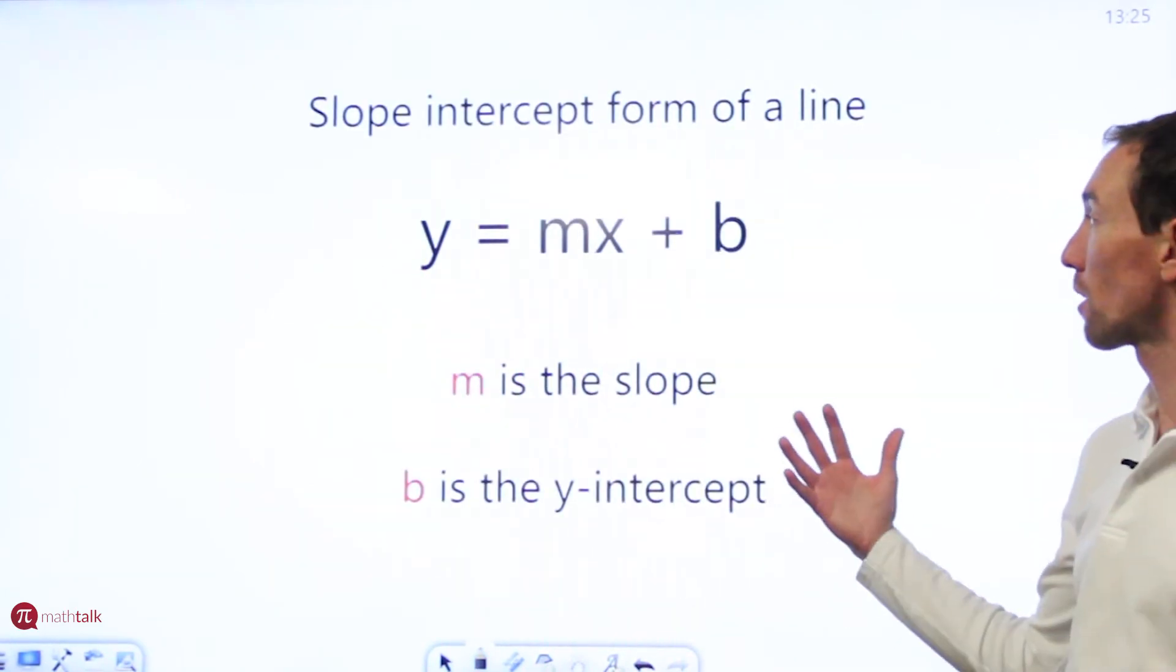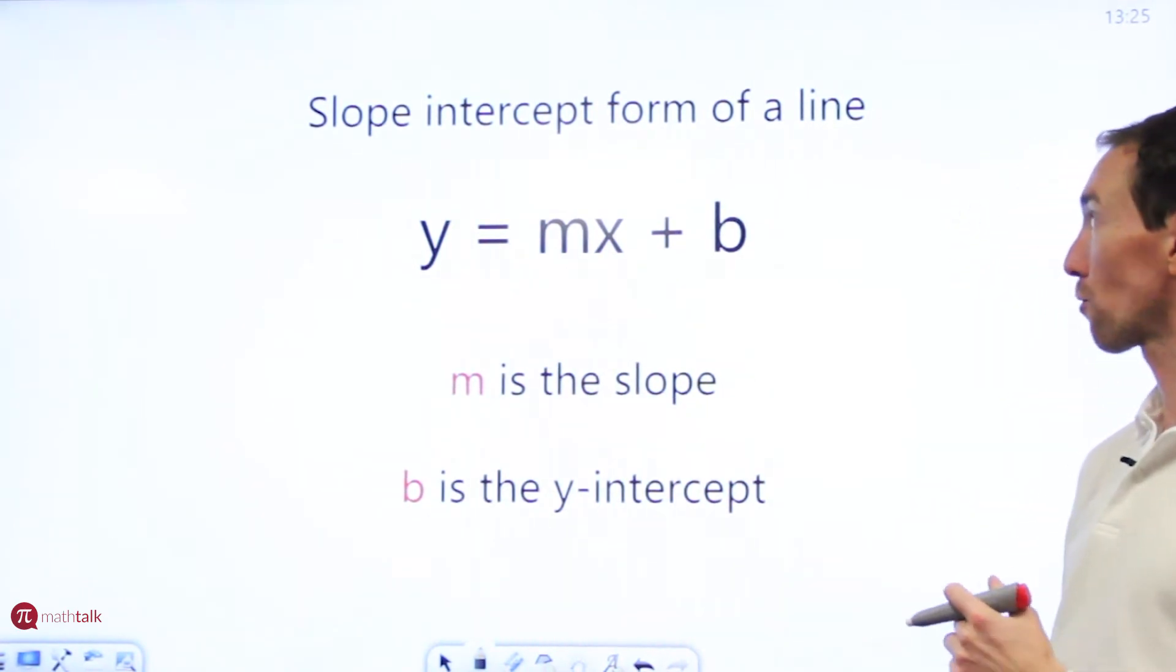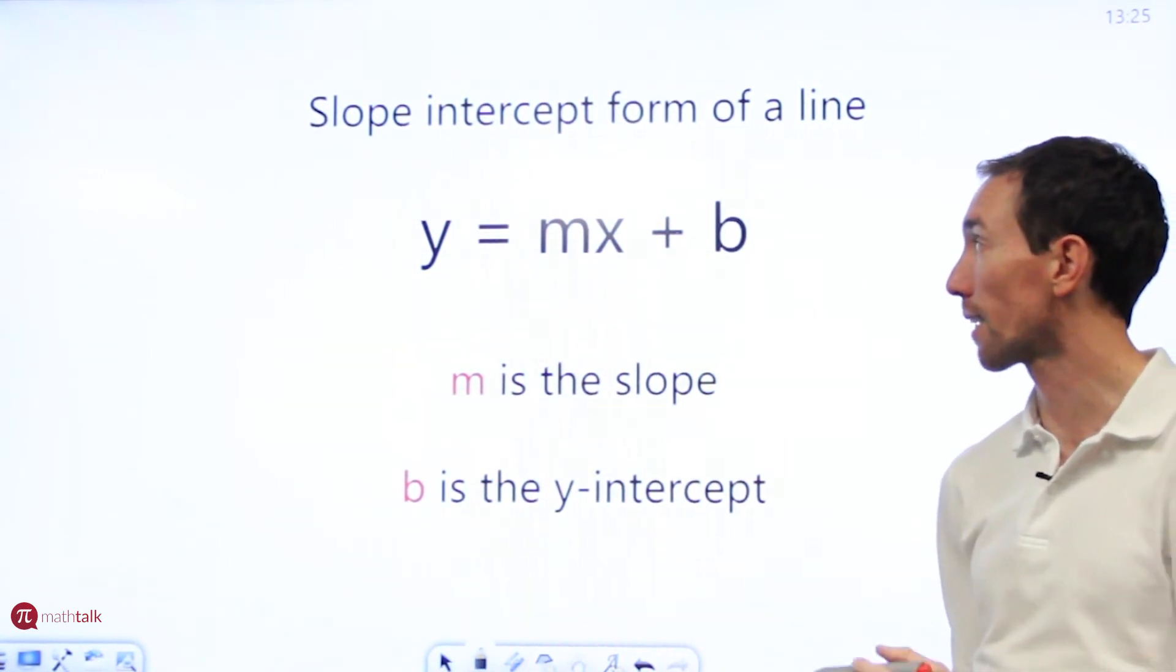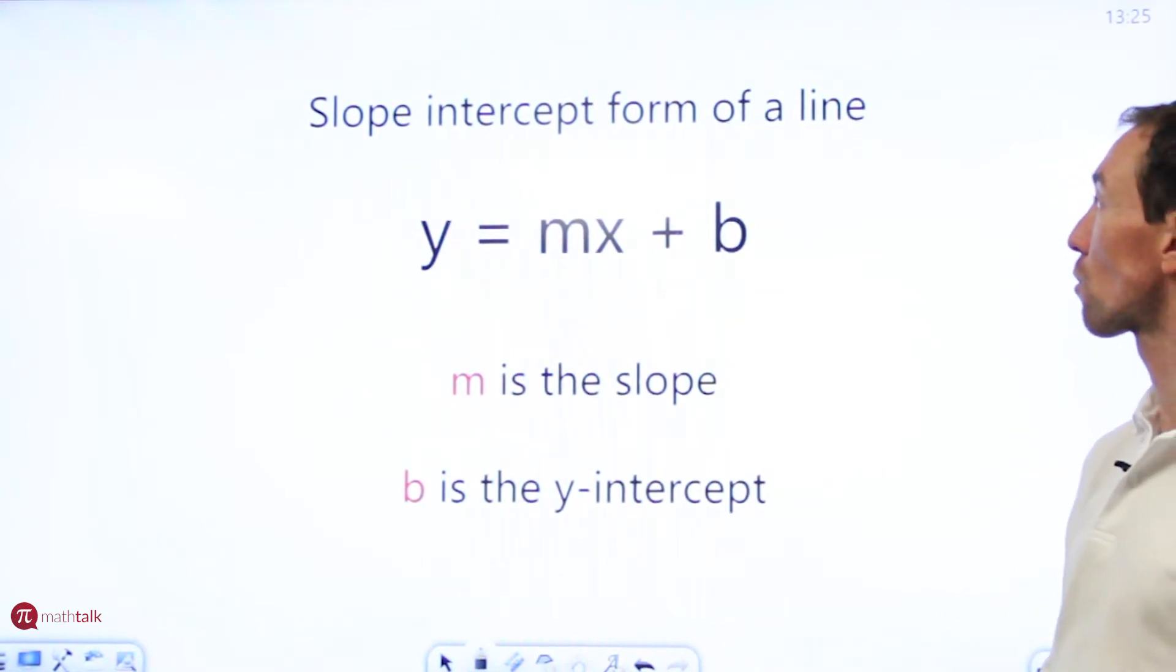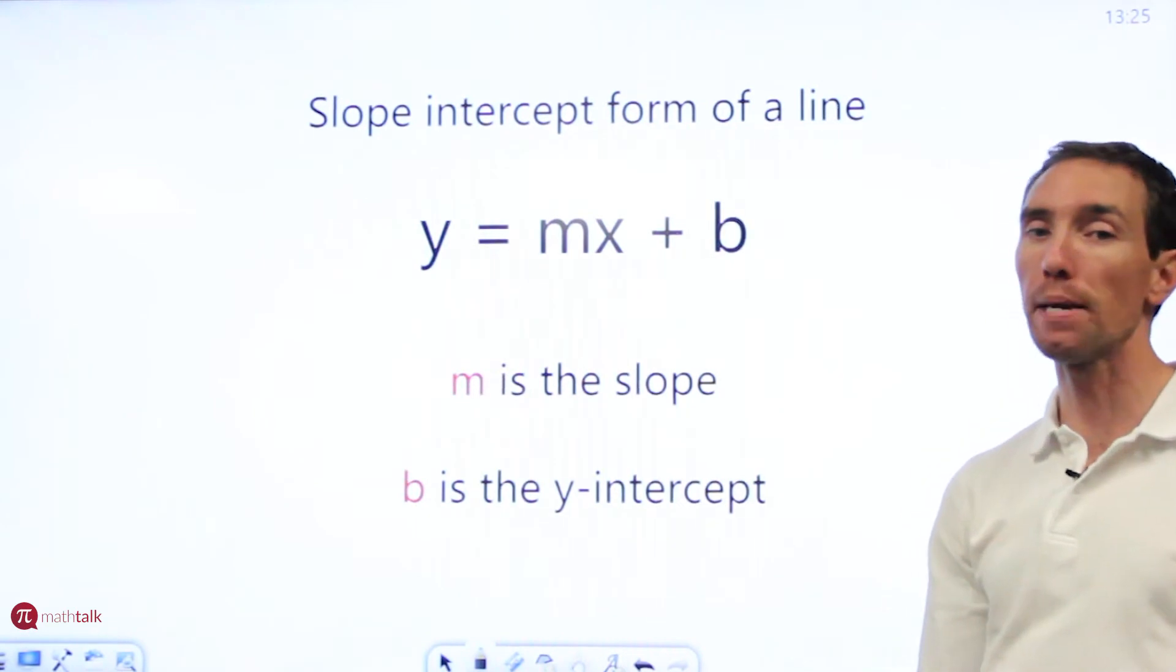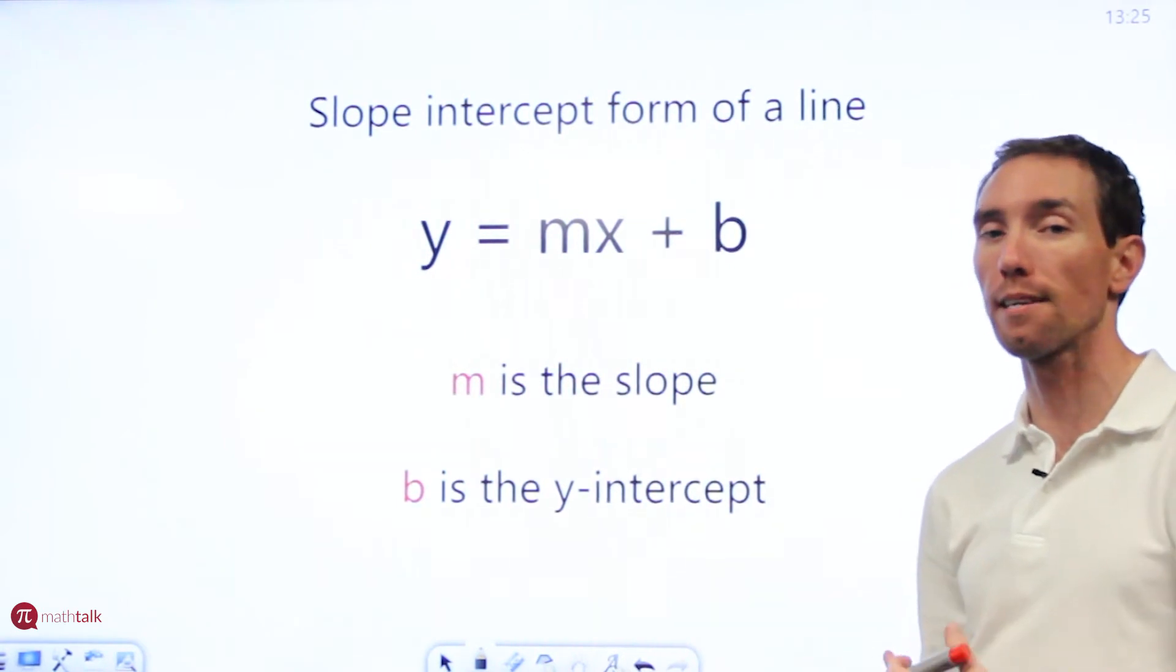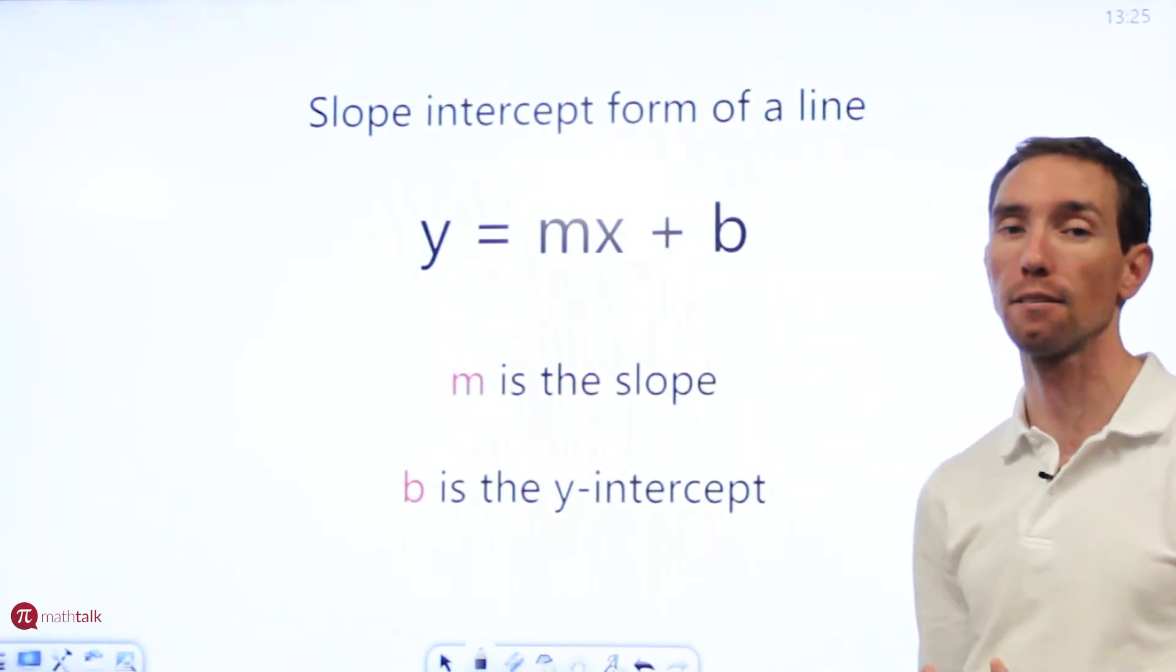Before we get started I want to show you some information that's helpful when you're looking at the equation of a line. There's two different equations of a line. The most common one I think is called slope intercept form of a line. It looks like this: y equals mx plus b. The reason it's called slope intercept is because m in your equation is the slope and b is the y-intercept. It's where the graph crosses the y-axis and those are really two important things to keep in mind when you're looking at both the equation and how to find the equation from the graph itself.